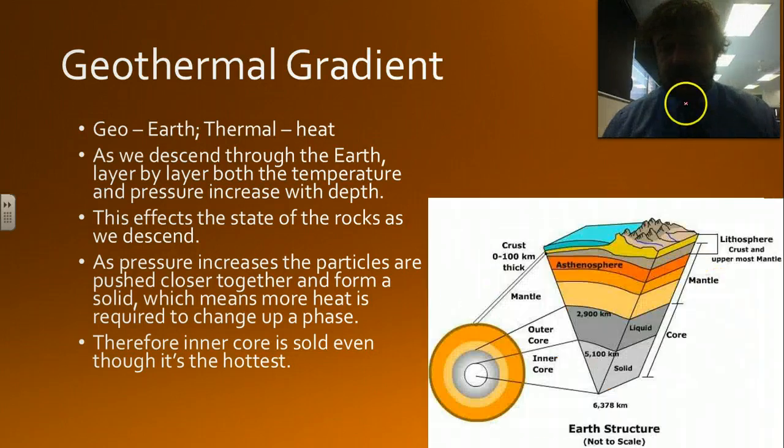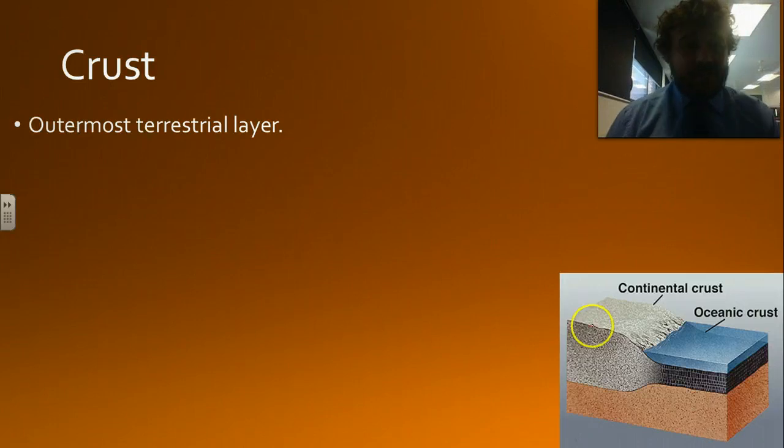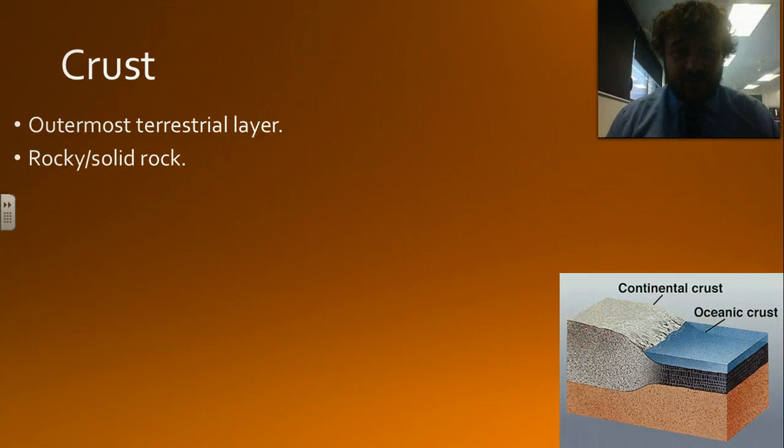If we're back here, here's a bit more detailed picture, not to scale, important to know. We'll come back to this in a minute. Here's the temperatures and the depths. So the crust, this is the terrestrial area, the outermost layer. We live on this. Terrestrial means Earth by the way. It's rocky and solid, so it's a solid layer.